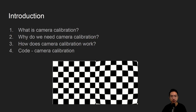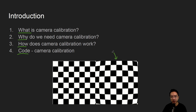In this video we're going to talk about camera calibration in OpenCV using Python. We will start off by saying what it is, why we need it, how does it work, and jump right into the coding example. By the end of this video we'll see how we can take a distorted image and undistort it.